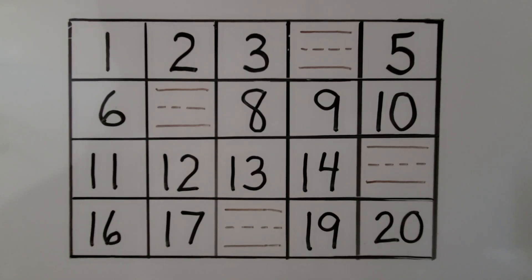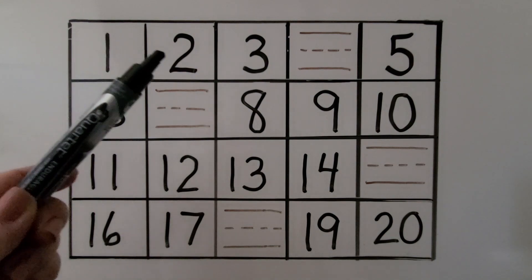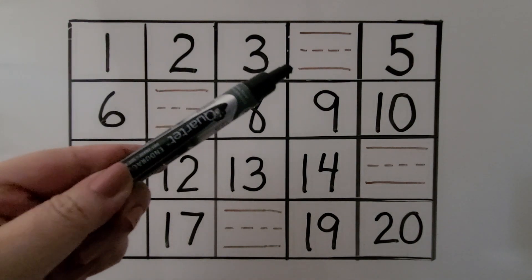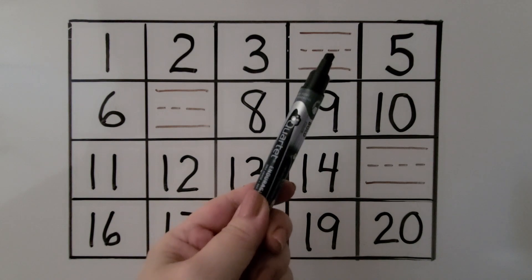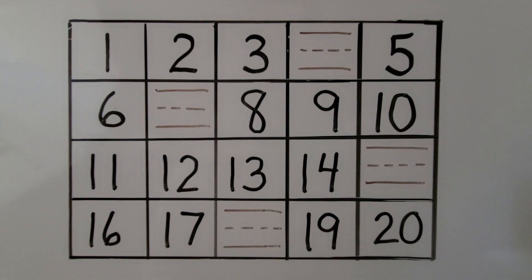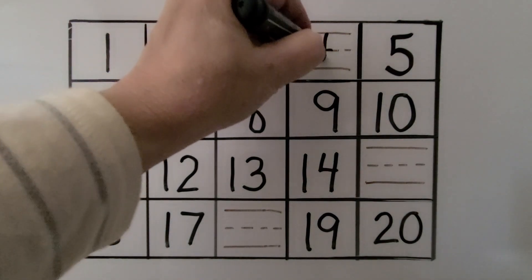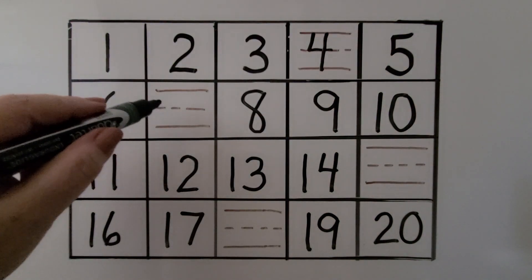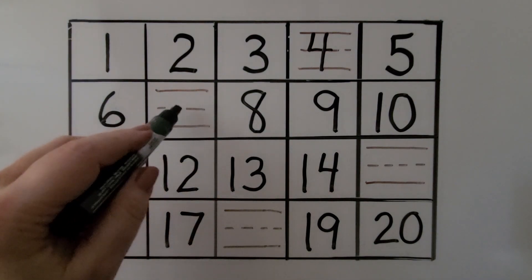These numbers are in counting order, but some numbers are missing. We need to write in the missing numbers. When we count, we have 1, 2, 3. What number is 1 greater than 3 and 1 less than 5? What number comes in between 3 and 5? Do you know? If you said 4, you're correct. We say 1, 2, 3, 4, 5, 6. What number is 1 greater than 6? It's 1 less than 8. If you said 7, you're correct.